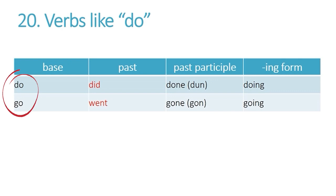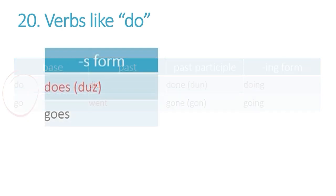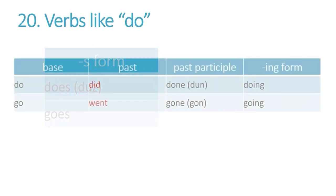For example, DO and GO both end in an O but one is pronounced DO the other is pronounced with an O sound GO. For the S form they both have OES as their ending but DO is pronounced DOES. GO is pronounced GOES in the S form. Then of course the past forms of these two verbs are completely different DID and WENT.